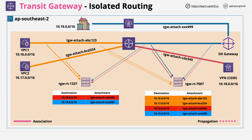Instead, we create another route table — route table 1337. We set the on-premises attachments to propagate their routes to this route table, meaning it contains the 10.18 and 10.19 CIDR ranges, and then we associate this route table with the VPC attachments. This means the VPCs can route to the on-premises networks, because those attachments propagate their routes to this table, but the VPCs can't reach each other, because they're not propagating their routes to this route table. In effect, it creates two isolated routing domains. This is really critical to understand for the exam and for real-world usage.